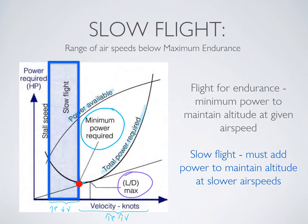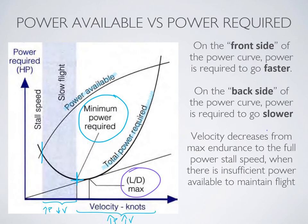Beyond the point of maximum endurance, you enter the condition referred to as slow flight — a condition where additional power is required to fly at a lower airspeed, i.e., a higher angle of attack than the maximum endurance airspeed. We also call this area the backside of the power curve, because instead of reducing power to fly more slowly as on the front side, you must actually increase power to fly more slowly. It's also known as the area of reverse command.